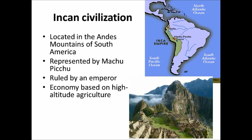Their economy was based on high-altitude agriculture — potatoes, beans, squash, peanuts, and cotton. They raised animals like llamas, guinea pigs, and alpacas. They used terrace farming: as you can see from this picture of Machu Picchu, different levels were cut into the mountain, and this is how they based their agriculture and their whole civilization.